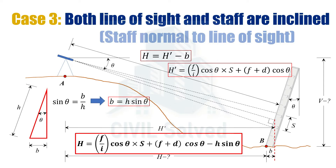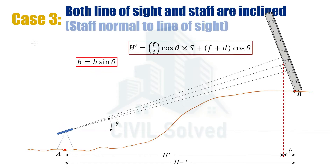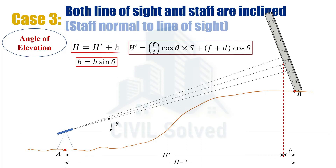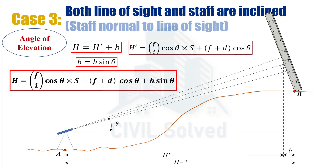Since we now have H' and B, putting these values into the formula for H gives us the final equation for H. This is for the case when we have the angle of depression. When we have the angle of elevation, there is a small difference: H' is smaller than H by the magnitude of B, meaning H = H' + B. So the final equation for the angle of elevation differs from the angle of depression only in that the term H sin θ is added rather than subtracted.